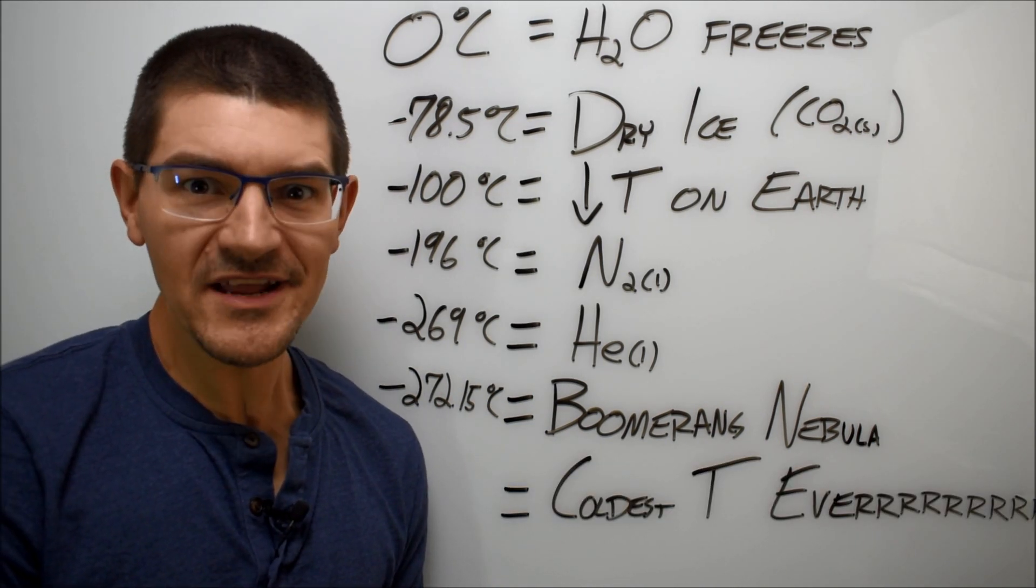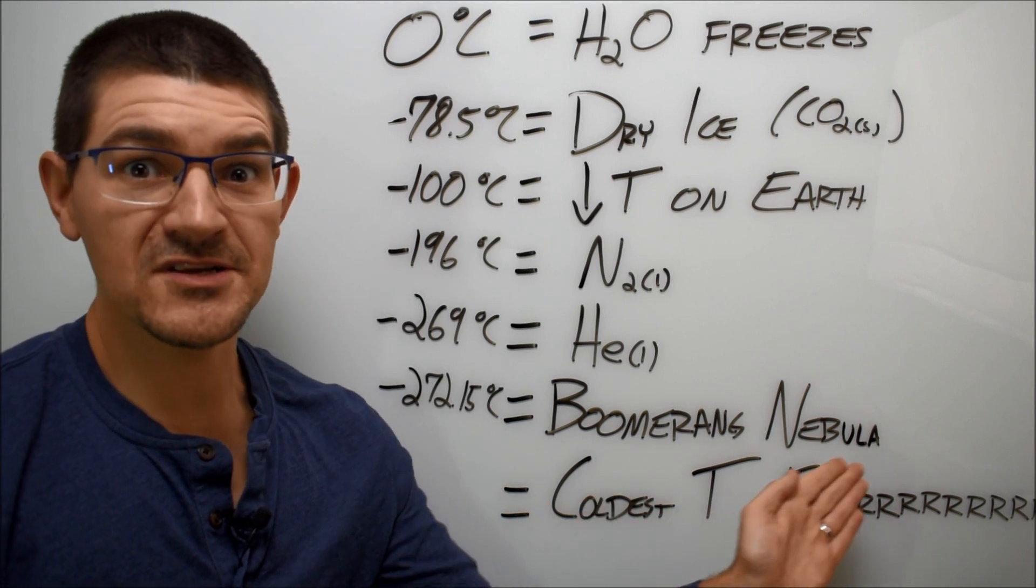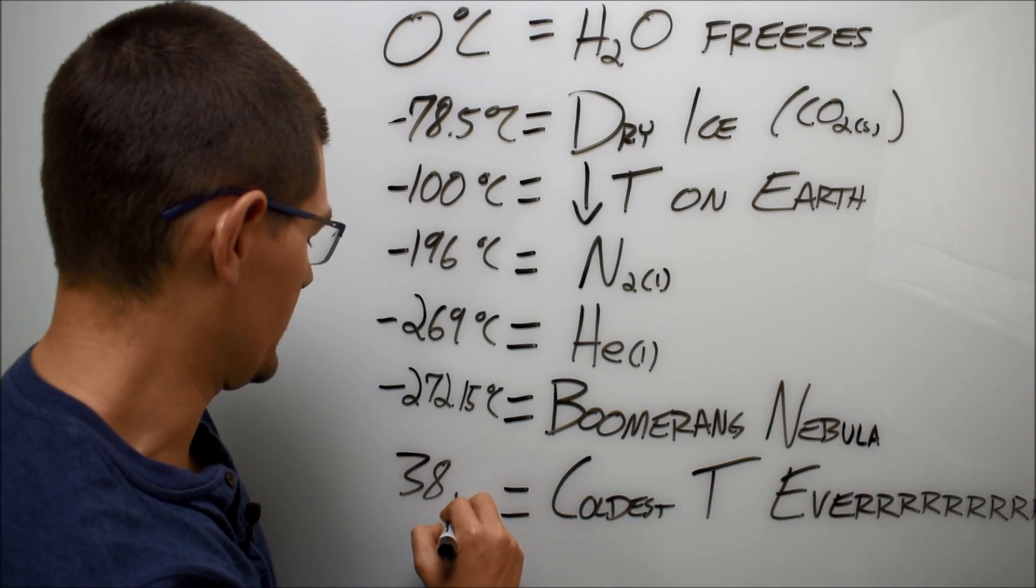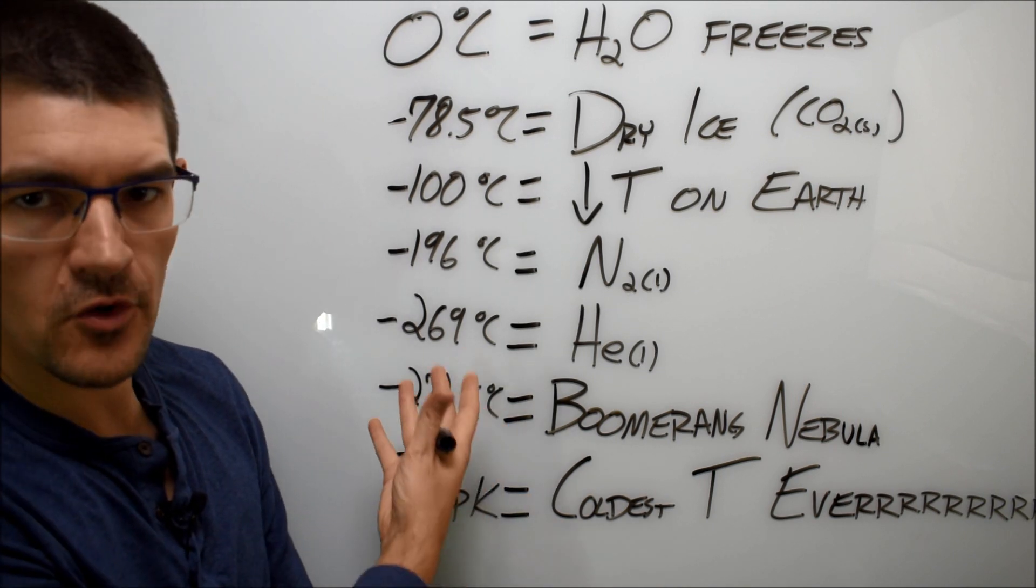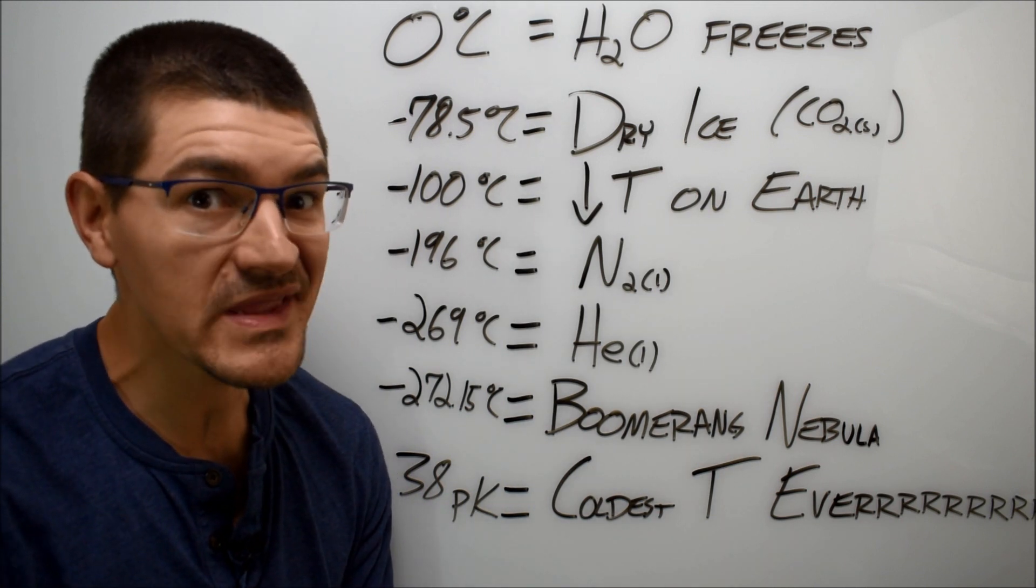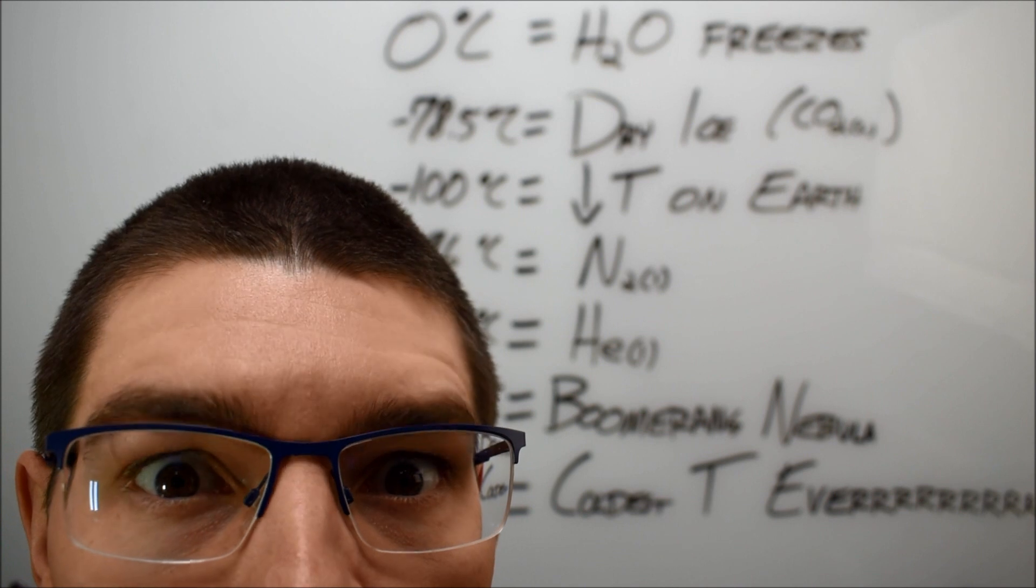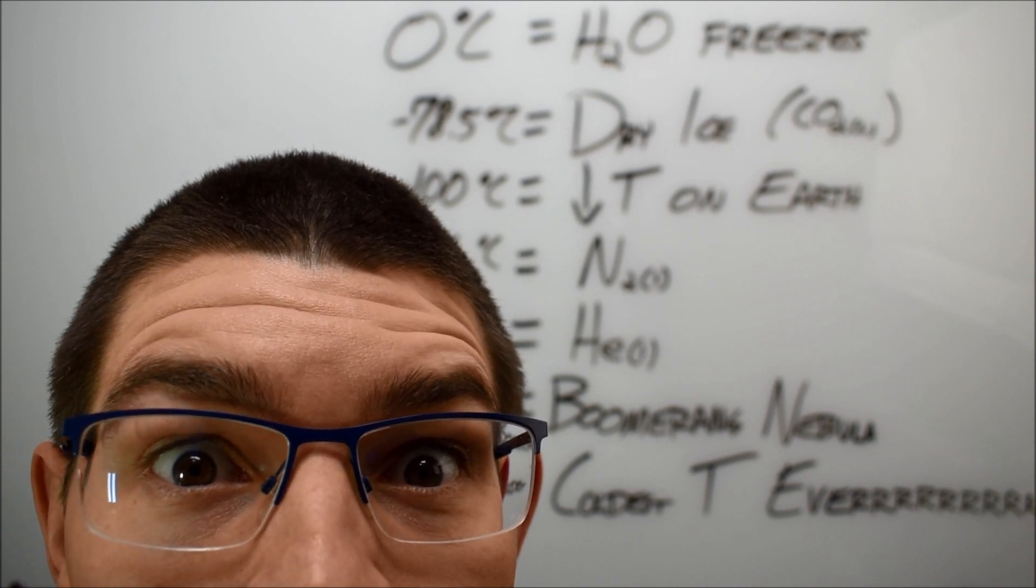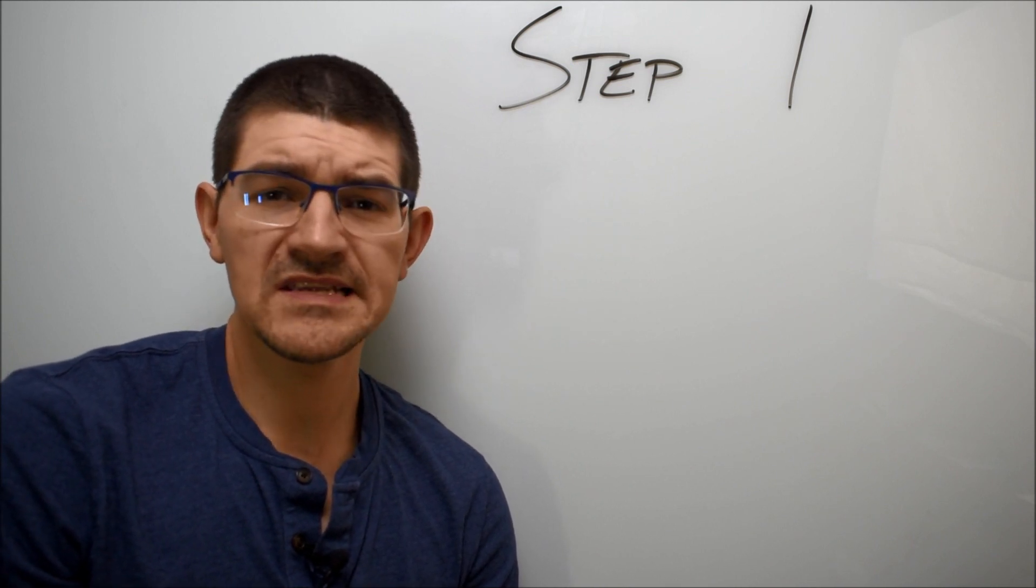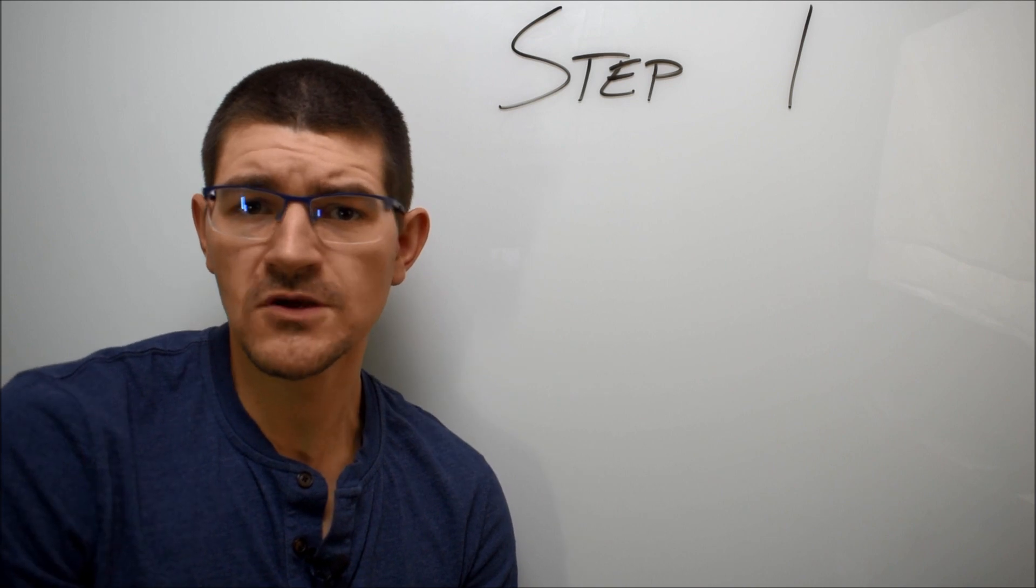And now the moment you've all been waiting for, even though I spoiled it at the beginning of the video, the coldest temperature ever! 38 picokelvins. Yes, I know I changed my scale, but if I wrote that in Celsius, it basically would look like absolute zero, and that just wouldn't be correct, would it? How could this be? How could somebody get so close to absolute zero? Let's talk about it. Step one: take about 100,000 rubidium atoms and put them in a cylindrical magnetic trap on a microchip. No, I don't know what that means either.